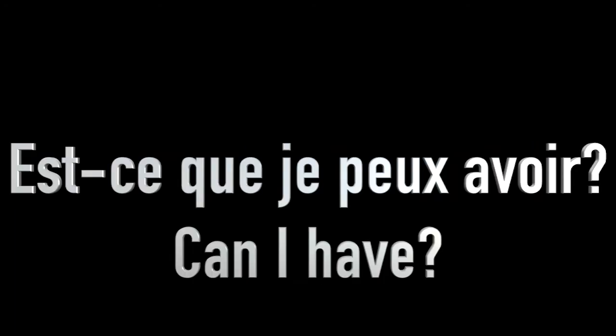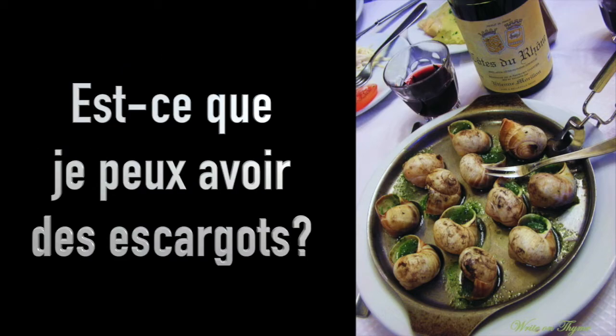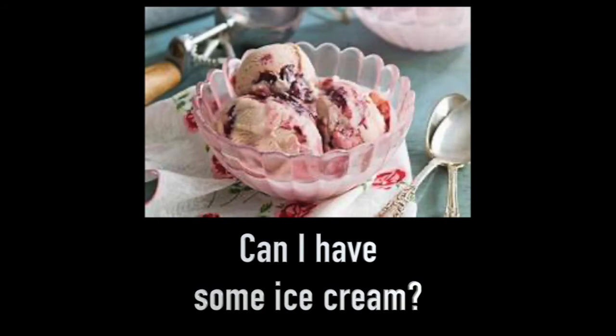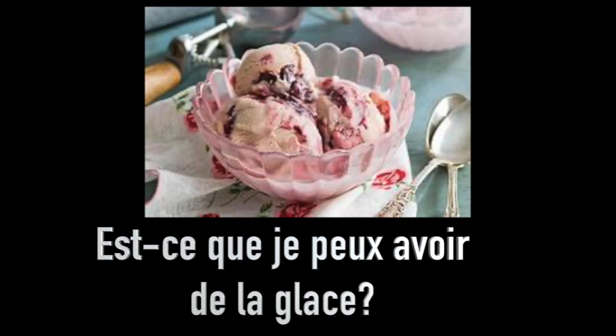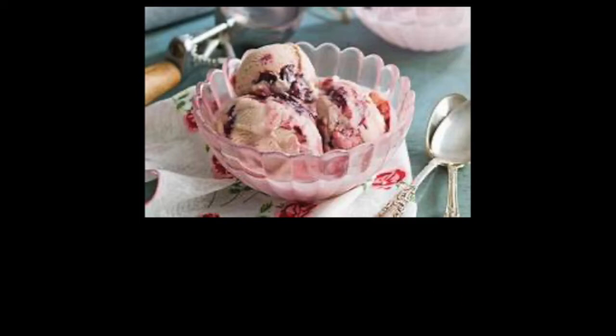We can put our phrases together: je voudrais (I would like), est-ce que je peux (can I), avez-vous (do you have) — combined with the partitive articles: du for masculine, de la for feminine, and des for plural. For example: 'Can I have some snails?' — Est-ce que je peux avoir des escargots. 'Can I have some cheese?' — Est-ce que je peux avoir du fromage. 'Can I have some ice cream?' — Est-ce que je peux avoir de la glace. 'Do you have any ice cream?' — Avez-vous de la glace. 'I would like some ice cream' — je voudrais de la glace.